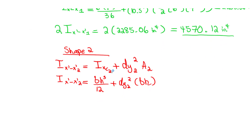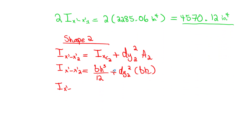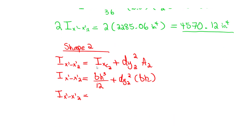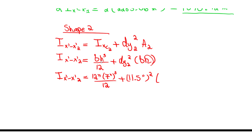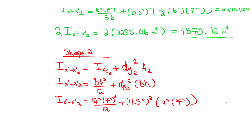Plugging in for shape two: base = 12 inches, height = 7 inches. So (12 × 7³)/12 plus (11.5)² times (12 × 7). Computing all of that gives approximately 11,452 inches to the fourth.